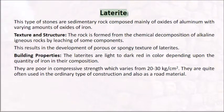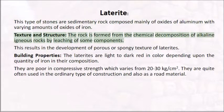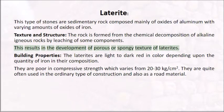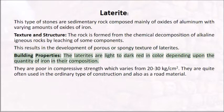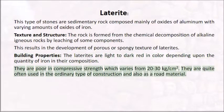Laterite is a sedimentary rock composed mainly of oxides of aluminum with varying amounts of oxides of iron. The rock is formed from the chemical decomposition of alkaline igneous rocks by leaching of some components, resulting in a porous or spongy texture. Laterites are light to dark red in color depending on the quantity of iron. They are poor in compressive strength, which varies from 20 to 30 kg/cm2, and are quite often used in ordinary type of construction and also as road material.